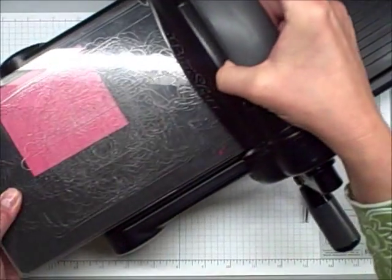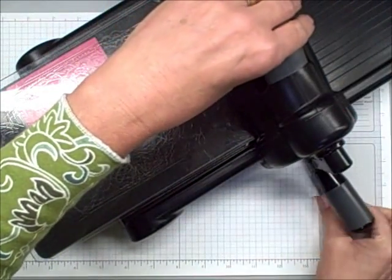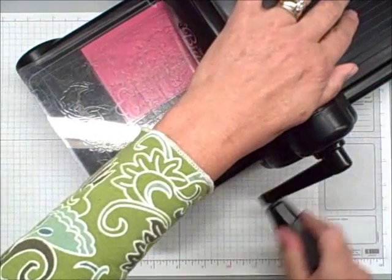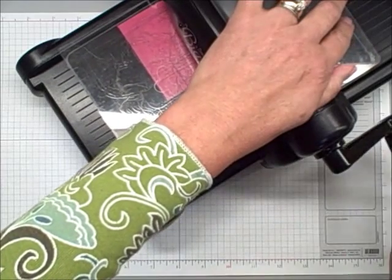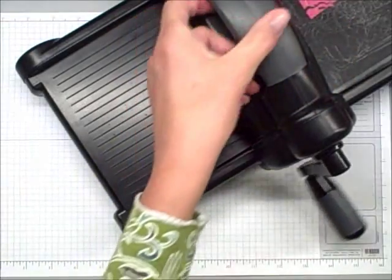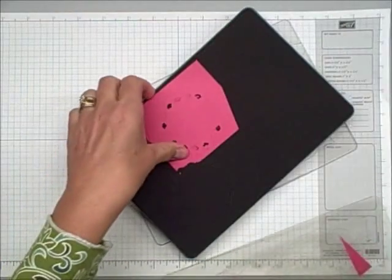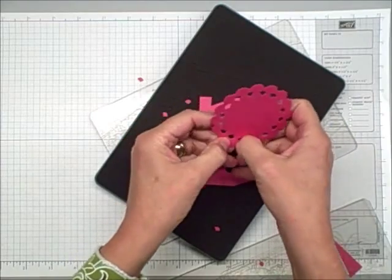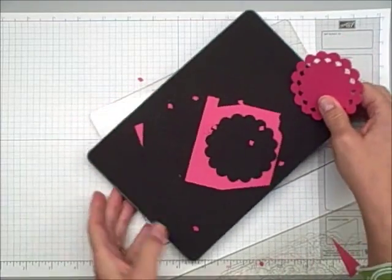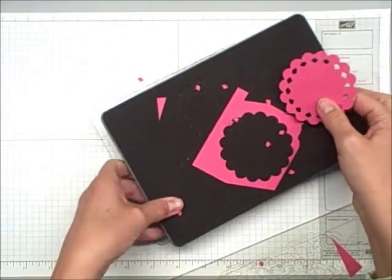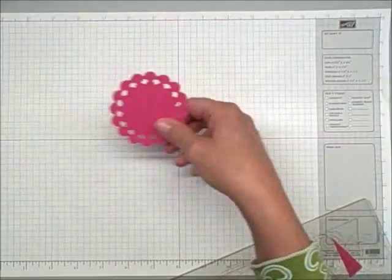So moving on, I'm going to use my Big Shot in order to cut the wonderful scalloped circle. I'm using the Pennant Parade Perfect Pennants Die. I hope I called it the right thing. Sometimes when I'm on camera I'm like, oh, what is it called? And these pop out really easily. So that's a super cool thing. Let me just look. Make sure I gave you the right thing. Yes, it's the Big Shot Perfect Pennants Die. It makes a lot of cool shapes.